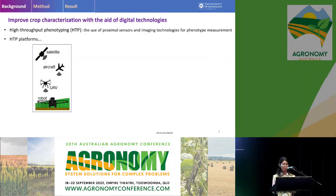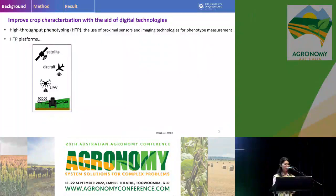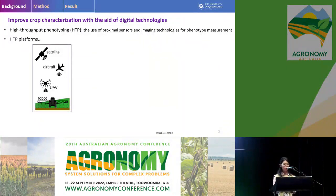The research objective is to improve crop characterization with the aid of digital technologies. High-throughput phenotyping is one of the most promising technologies that we can use in agriculture today, and it means the use of proximal sensing and imaging technologies for phenotype measurement.